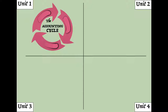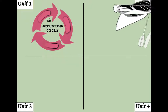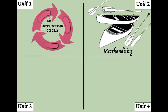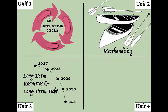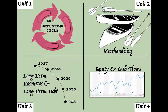Our class is basically broken into four different units. The first unit is all about the accounting cycle — we'll learn how accounting works, the different steps taken, the procedural things that go along with accounting, and its ultimate goal of producing information. In the second unit, we'll look at that same cycle but add the idea of a merchandising business — one that sells products. The third unit covers long-term resources and long-term debt.